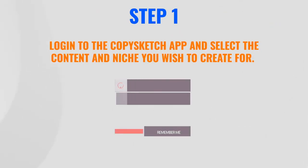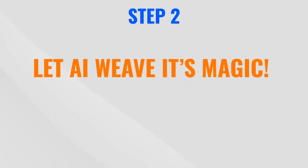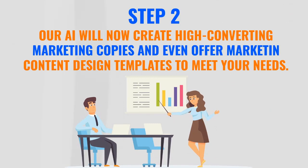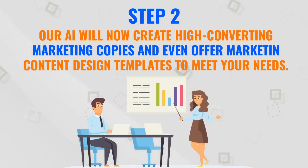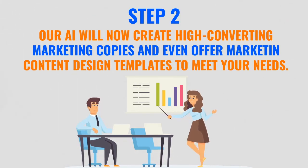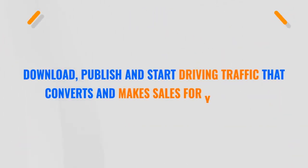Step one: log into the app and select the content and niche you wish to create for. Step two: let AI weave its magic — our AI will now create high-converting marketing copies and even offer marketing content design templates to meet your needs. Step three: that's it. Download, publish, and start driving traffic that converts and makes sales for you 24/7.